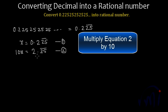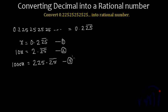So if I multiply both sides by 100, I'll get 1000x is equal to 225.25 repeating itself infinite times. Let me call it as equation number 3.